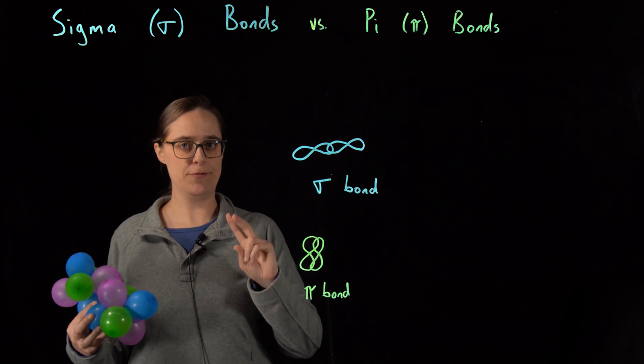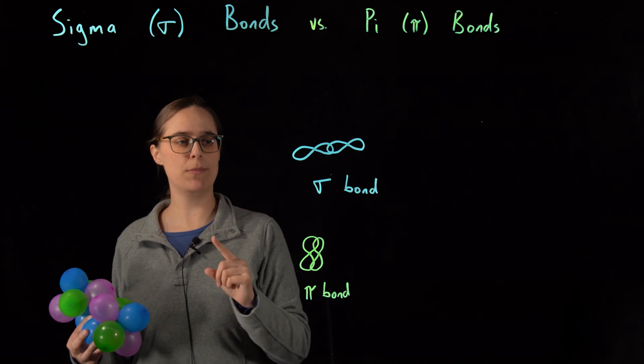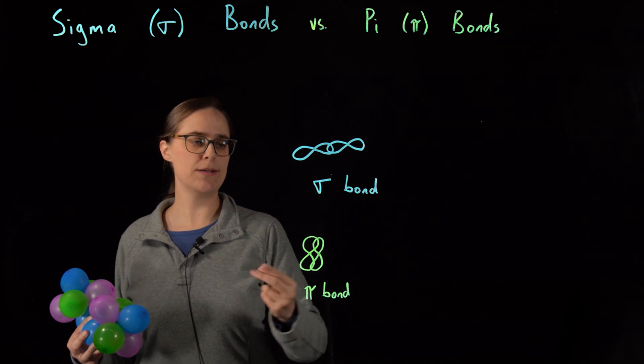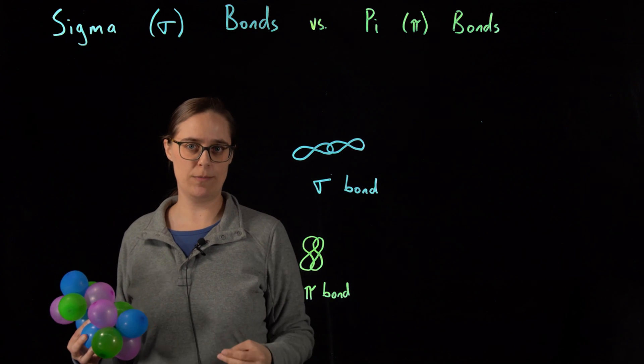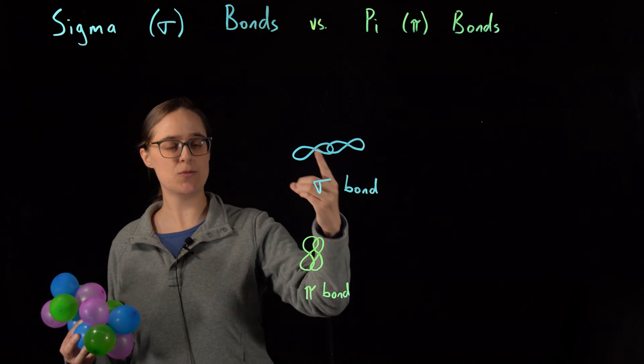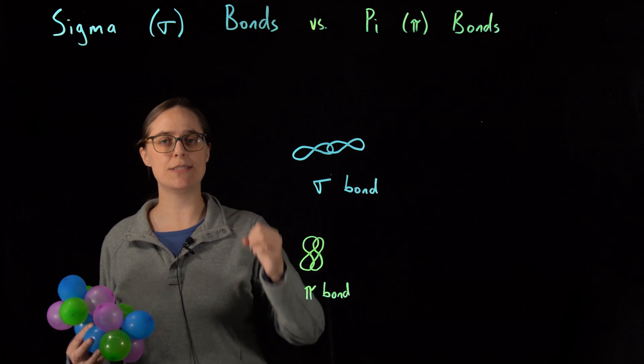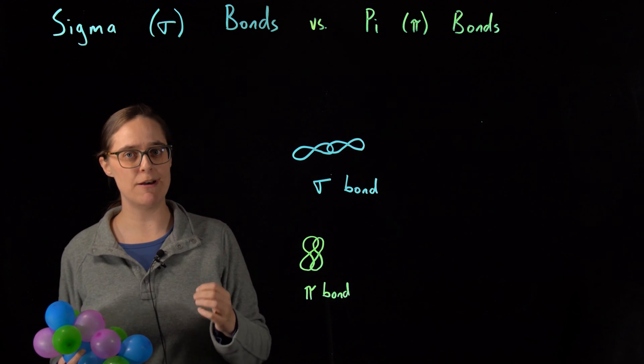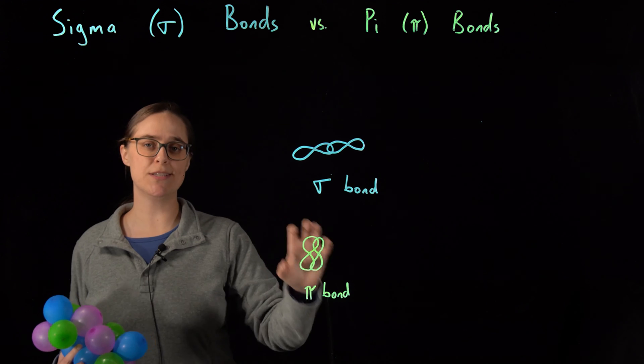So if two atoms have only one bond between them, it's a sigma bond. If they have a double bond, there's one sigma bond, one pi bond. If there's a triple bond, it's one sigma bond, two pi bonds. So in any bond, there is always one sigma bond, and additional bonds are pi bonds.